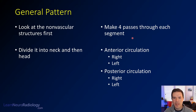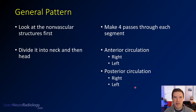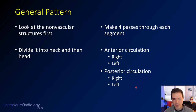You're going to make four passes through each segment, so you're going to look at each vessel separately. That's what it really takes to be able to see all of the abnormalities. I take a look at the anterior circulation first and look at it from right to left — the right internal carotid, then the left, then the right vertebral artery, and then the left. That's what I recommend for you as well.